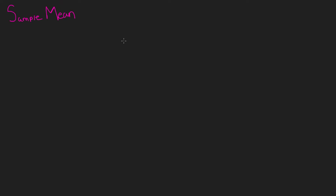We're going to use a small set of data as an example to better introduce sample mean. Formulaically, sample mean is represented as x-bar — don't be scared if you see x with a bar over it, that represents sample mean — and it equals 1 over n multiplied by the summation from i equals 1 to n of x sub i.